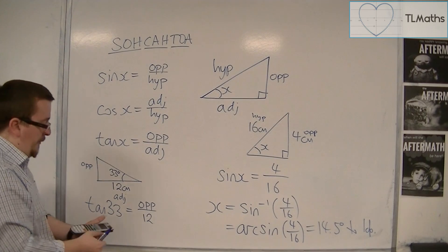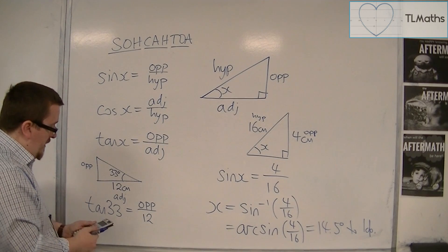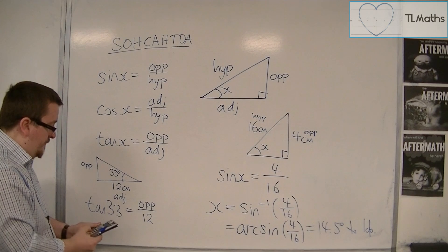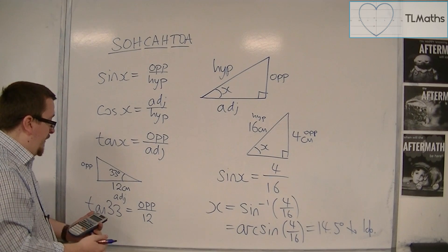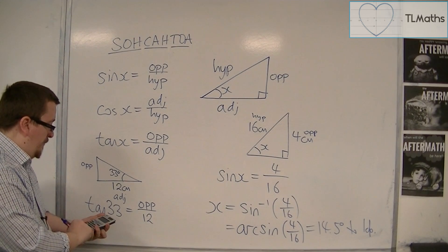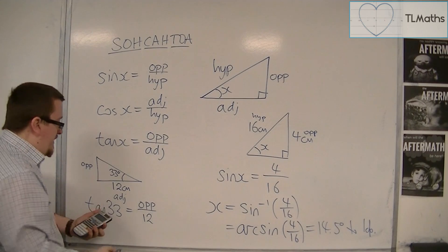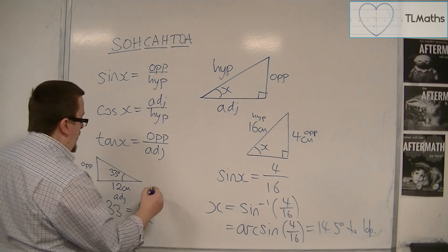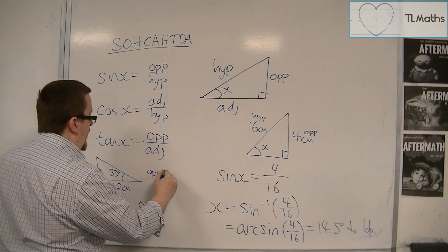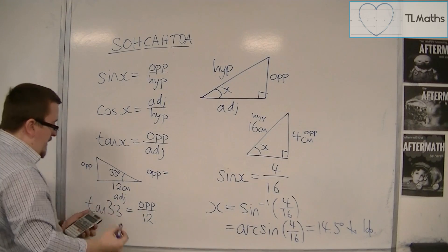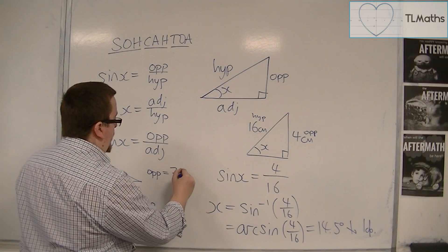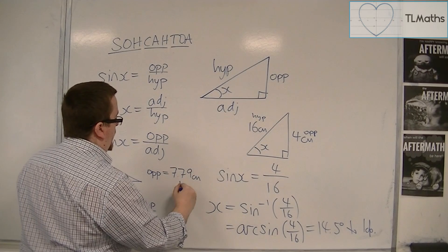So I just need to multiply both sides of this equation by 12. So tan of 33 is 0.649 times by 12, and we get 7.79. So the opposite, the length that we're trying to find, is 7.79 centimetres to two decimal places.